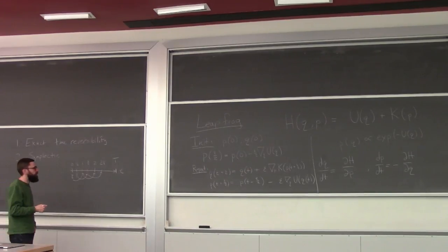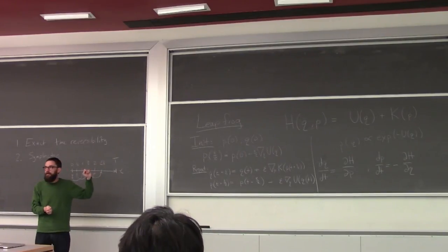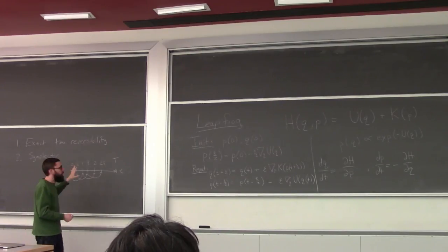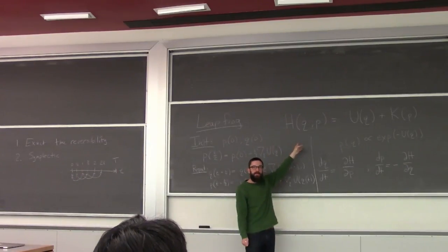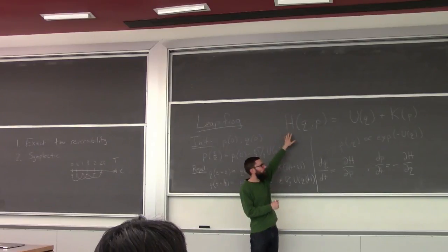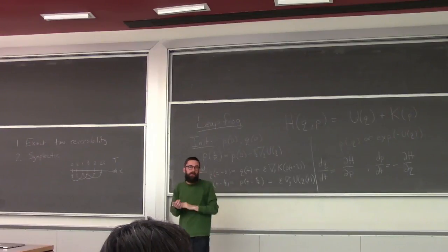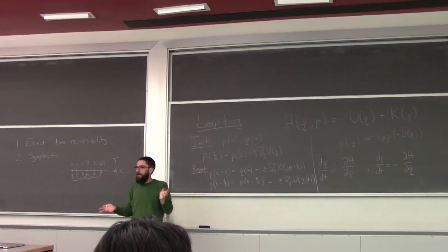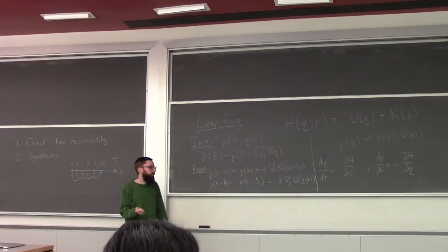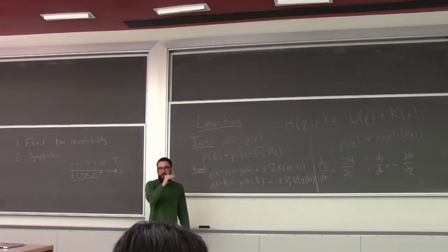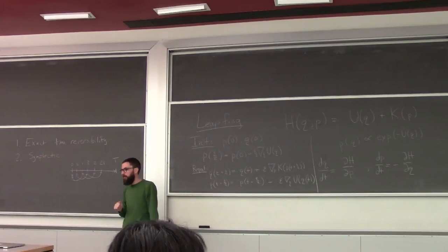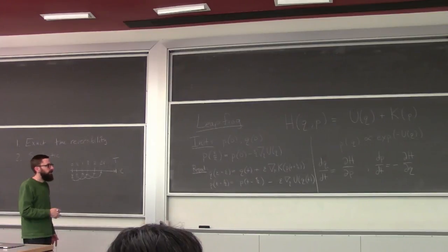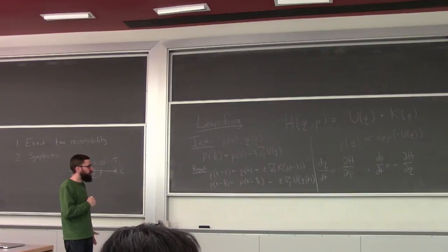If you use some other integrator — even a fancier one like a Runge-Kutta method — it won't give you a correct MCMC algorithm because it won't satisfy these two properties. Now, the leapfrog is not guaranteed to conserve the Hamiltonian. It conserves the volume form and has time reversibility, but it doesn't perfectly conserve the total energy H. It does better than an Euler method or even Runge-Kutta, but it doesn't preserve it exactly. That's why we have an acceptance-rejection step at the end, giving higher acceptance rates than simpler integrators.